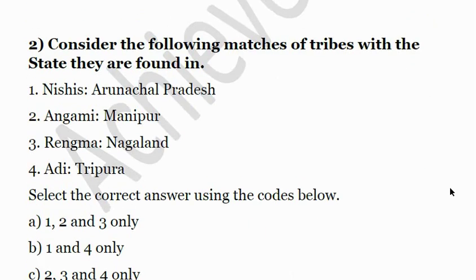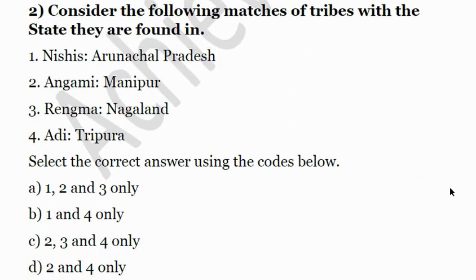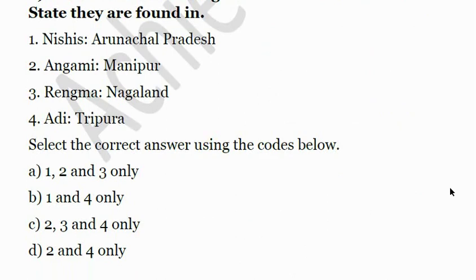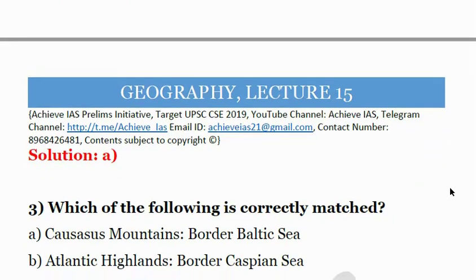Second question: Consider the following matches of tribes with the states they are found in — Nishis in Arunachal Pradesh, Angami in Manipur, Ringma in Nagaland, and Adhi in Tripura. The correct matches are the first three: Nishis in Arunachal Pradesh, Angamis in Manipur, and Ringma in Nagaland. The answer is A.